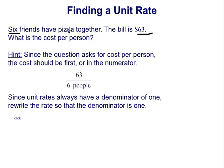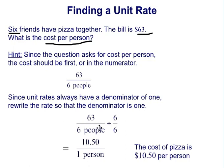That gives us 63 dollars over 6 people. But we want cost per person, so we need to find the unit rate. Since unit rates always have a denominator of one, we divide both by six: six divided by six gives us one person, and 63 divided by six gives us 10.5. So the cost of the pizza is $10.50 per person.